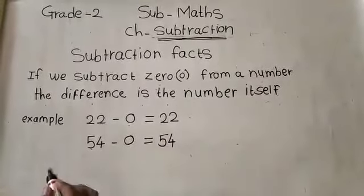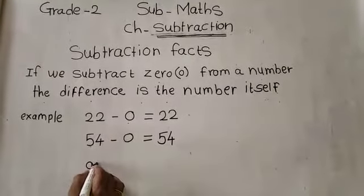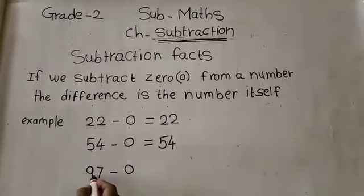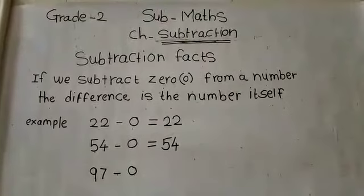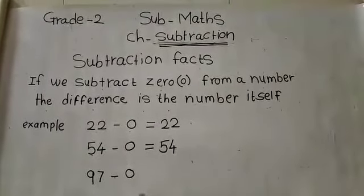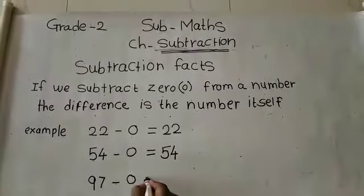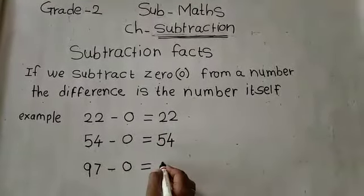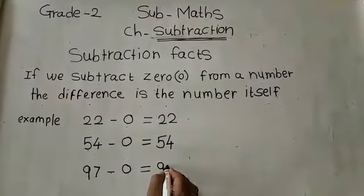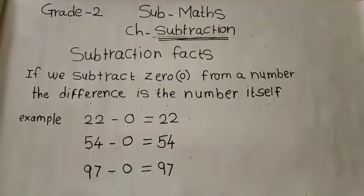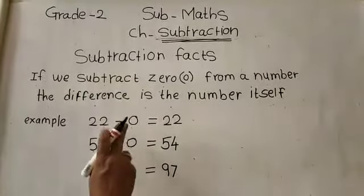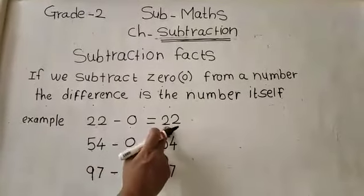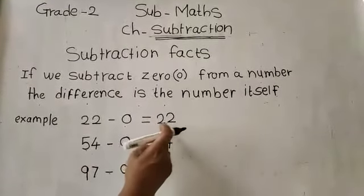Another example: 97 minus 0, means 97 minus nothing. Tell me what will be the answer. Yes — the answer will be the number itself, which is 97. So if we subtract zero from a number, the difference is the number itself.